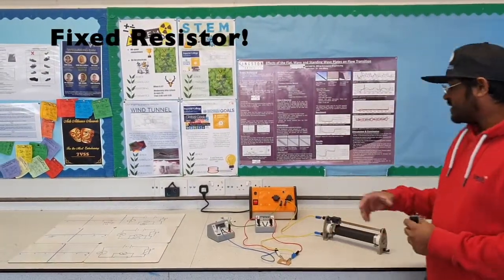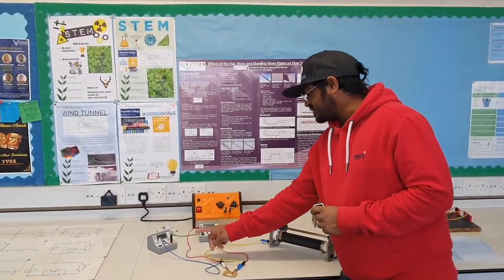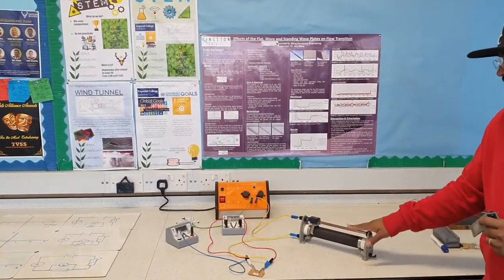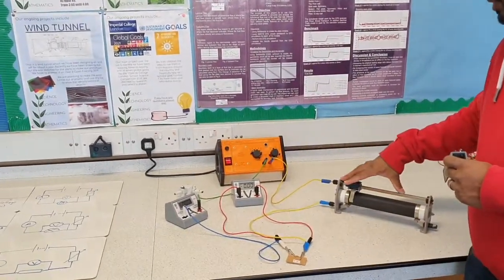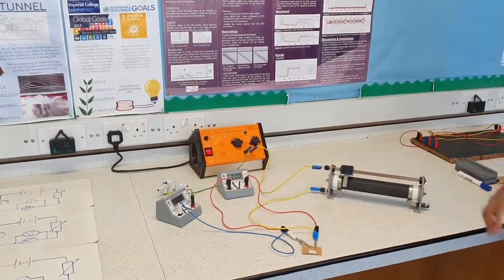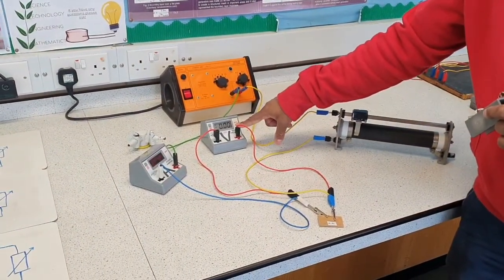Here I have the setup already made. We've got the power pack, the ammeter, the voltmeter, and the variable resistor, and I've already connected the fixed resistor. The variable resistor allows us to adjust the flow of current, which allows us to get different readings of the potential difference.